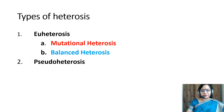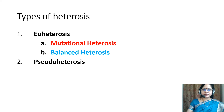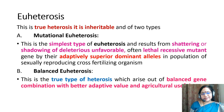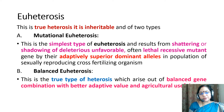Now we come to types of heterosis. There are two types: number one is U-heterosis, and number two is pseudo-heterosis. U-heterosis is further divided into mutational U-heterosis and balanced U-heterosis.